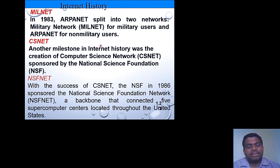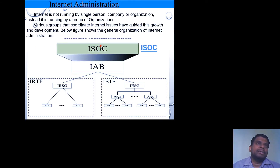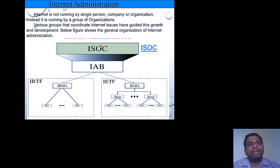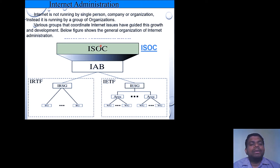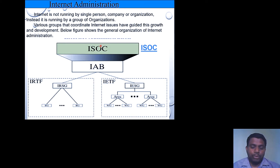Now let's discuss the structure and administration of the internet. The internet is not owned or organized by a single person or single organization — it is organized by various groups of users and organizations. These multiple organizations form one society that maintains internet services to provide the best services to end users. This is called the Internet Society, or ISOC.